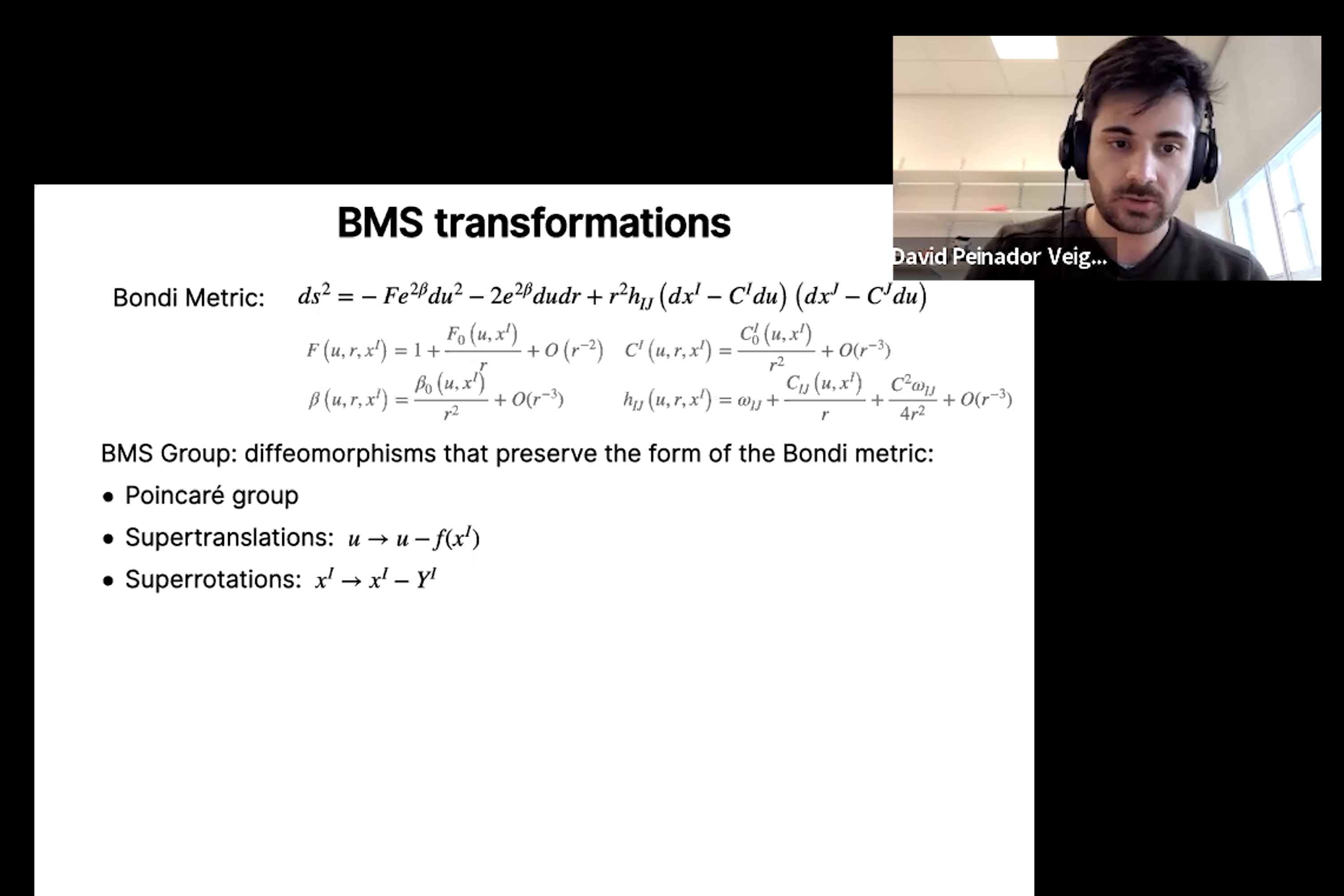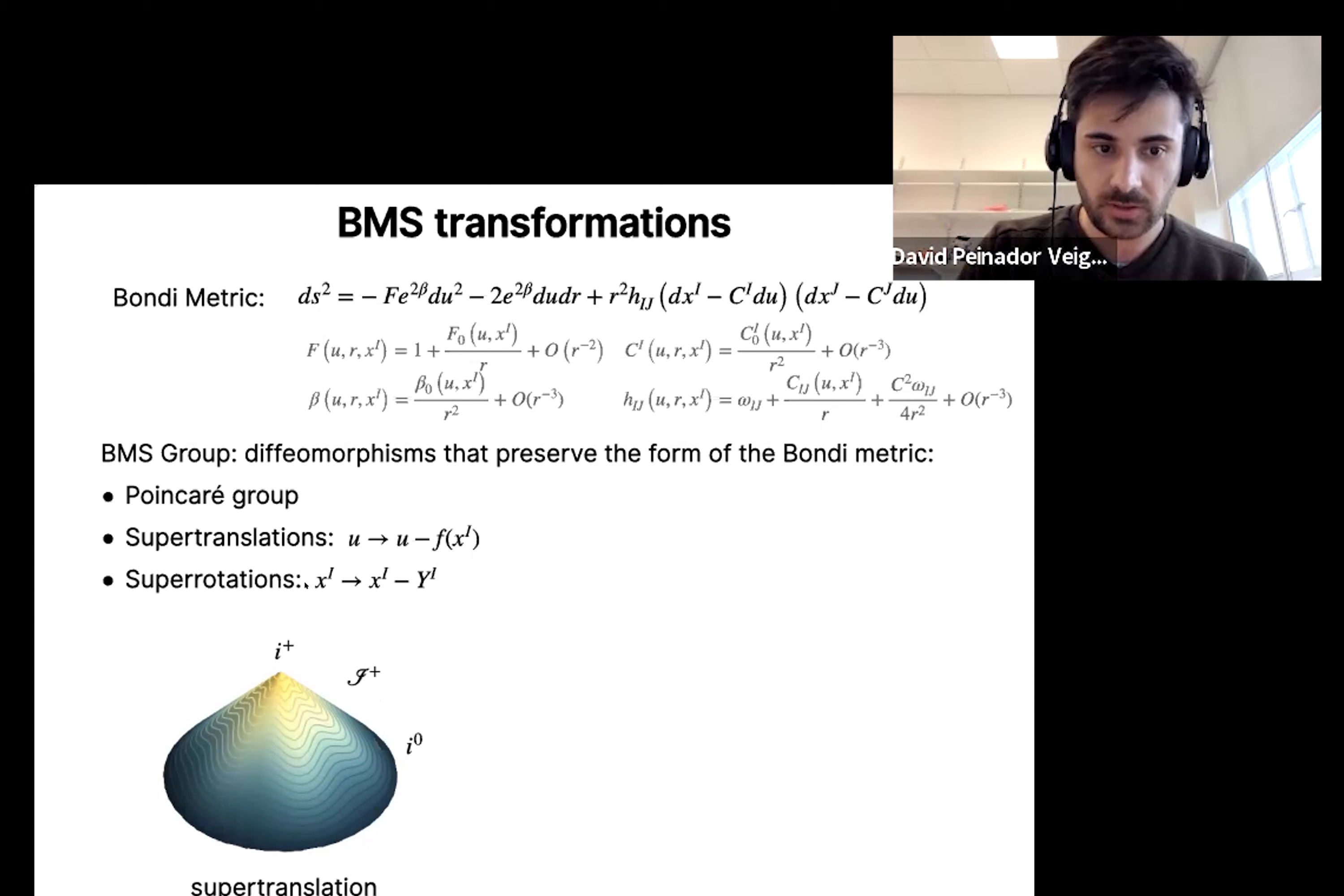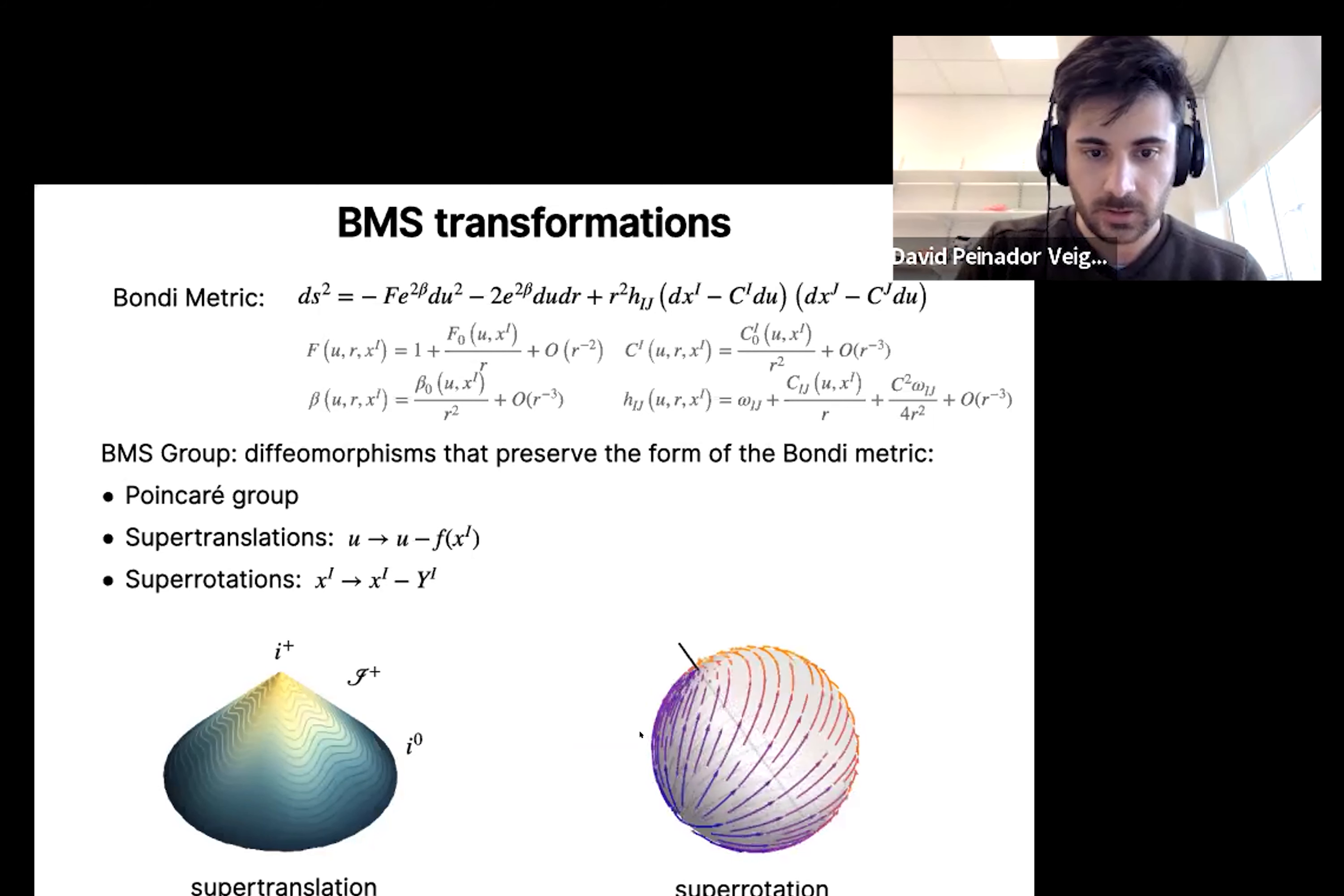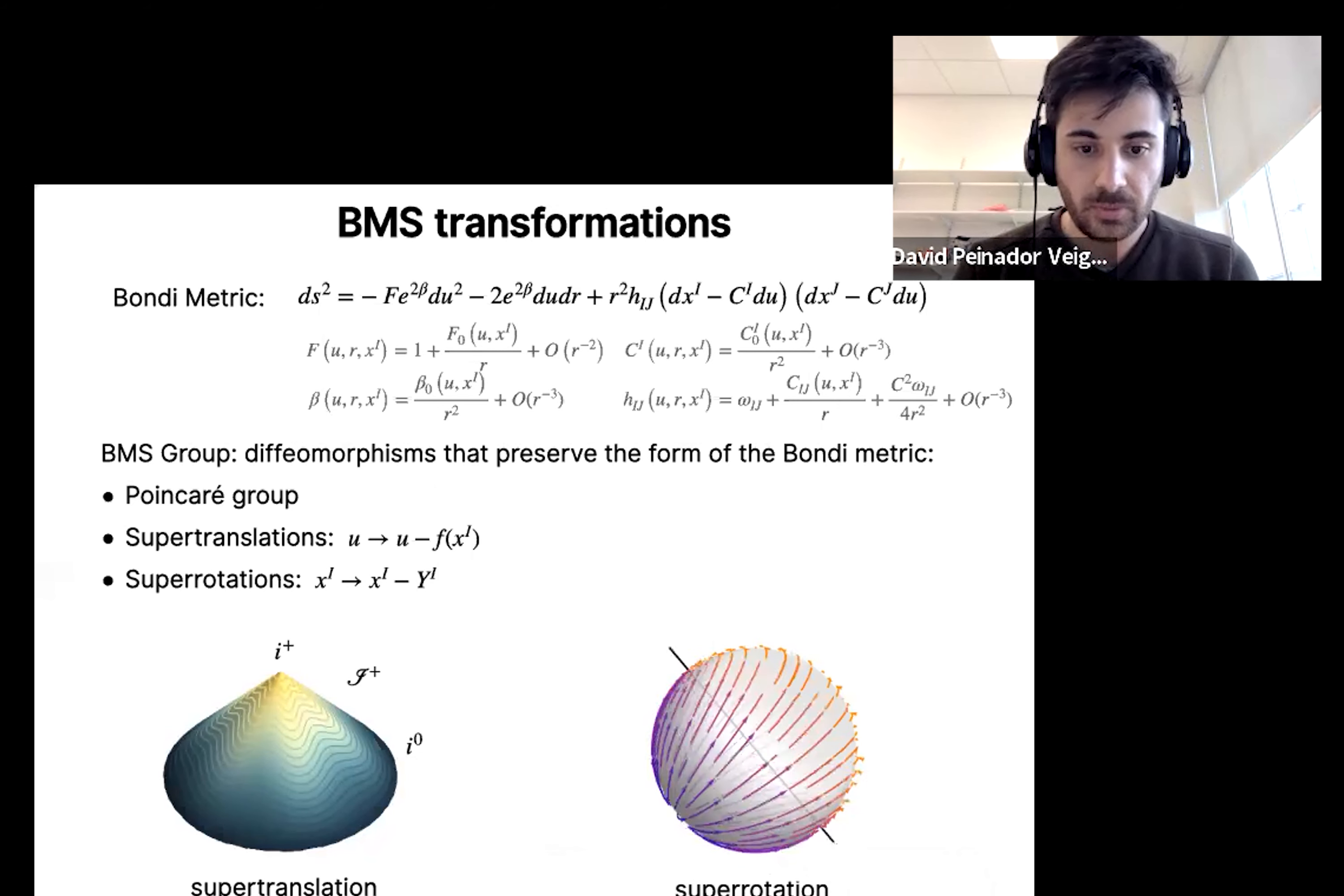You have the supertranslations, which are translations of the retarded time parameter by some function of the angles. So if you picture this cone to be scri-plus and the lines to be constant u slices, then a supertranslation, what it does is just deforms the constant u slices by some angular function. You also have super-rotations. Super-rotations are conformal transformations on the celestial sphere, on the two-sphere, which are not well defined globally. So, for example, this image here represents a super-rotation. You see that there are some points in which this diffeomorphism is not well defined.